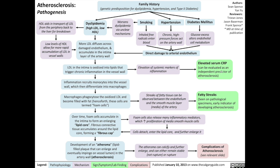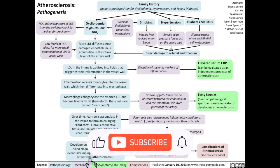Serum CRP can also be evaluated as an independent predictor of atherosclerosis. Once chronic inflammation is triggered in the vessel wall, that inflammation recruits monocytes into the blood vessel wall, which then differentiate into macrophages. The macrophages phagocytose the oxidized LDL and become filled with fat — henceforth, these cells are termed foam cells.